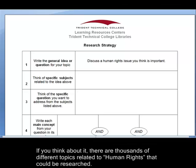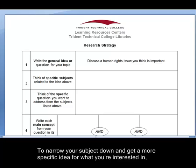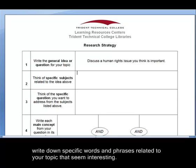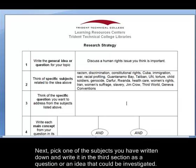There are thousands of different topics related to human rights that could be researched. To narrow your subject down and get a more specific idea for what you're interested in, write down specific words and phrases related to your topic that seem interesting. Next, pick one of the subjects you have written down and write it in the third section as a question or an idea that can be investigated.